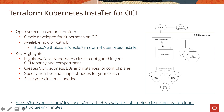It also lets you create worker nodes across different availability domains. You can choose what kind of compute node shape you want from the available shapes on OCI and even launch bare metal nodes. All you need to do is provide the shape in the Terraform variable file (the TF vars file), and it creates the cluster for you.